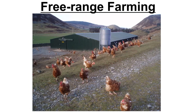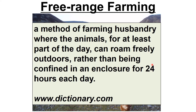Then you have free range farming, which looks more like this — closer to the natural environment. It is defined as a method of farming husbandry where the animals, for at least part of the day, can roam freely outdoors, rather than being confined in an enclosure 24 hours a day.